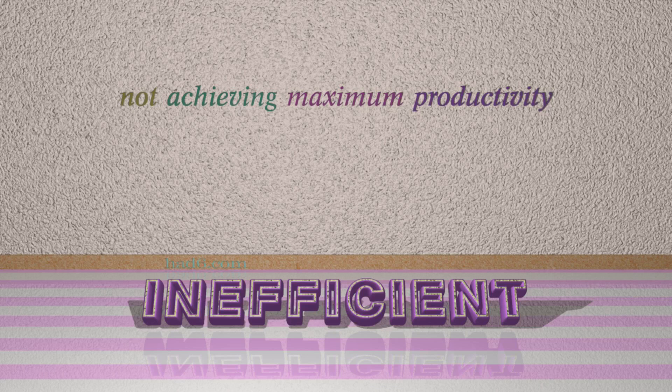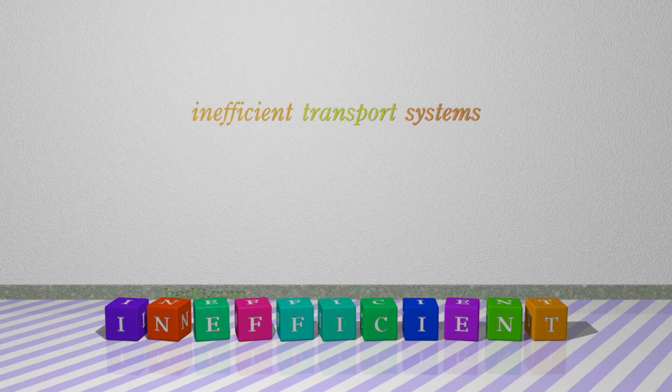Number 7: Inefficient. Which means not achieving maximum productivity. For example: Inefficient transport systems.